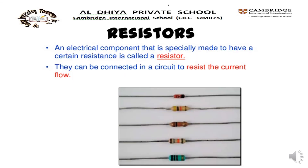We studied that a circuit contains components such as bulb, wire, battery, switch, etc. But other circuit components are also there — for example, resistors. An electrical component that is specially made to have a certain resistance is called a resistor.